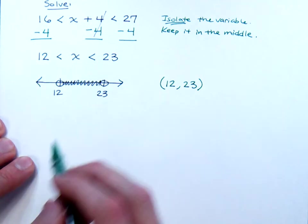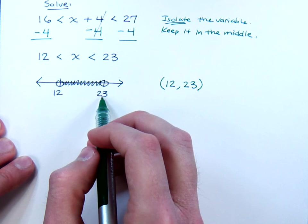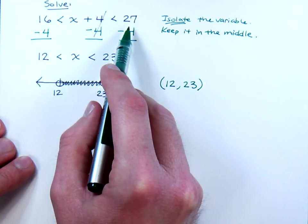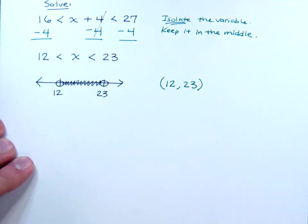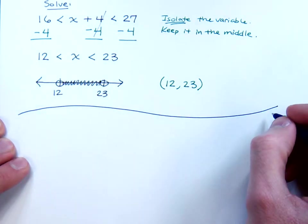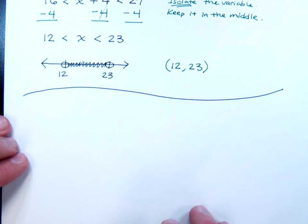So that means that any number that is between 12 and 23, not including those values, should be a solution for this original inequality. And I know what you're thinking. Wait a minute, Mr. Craig, I bet these will get more difficult, right? You know what, Johnny? You're right. I can't let them be this simple. Let's see how much more creative we can get.